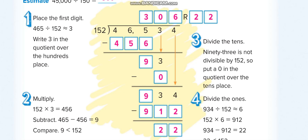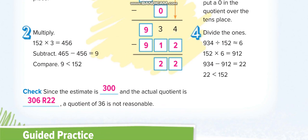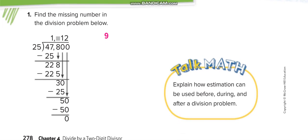What is the missing number here? 25 times... 125 times 2 is 50, we can't take that, it's 47. When you minus 22, you bring the 8 down. 25 times what is equal to 225?